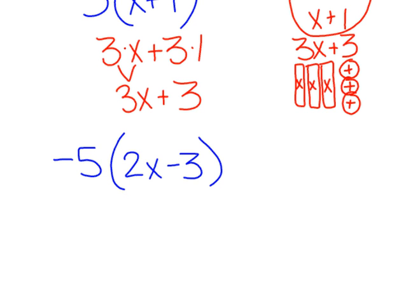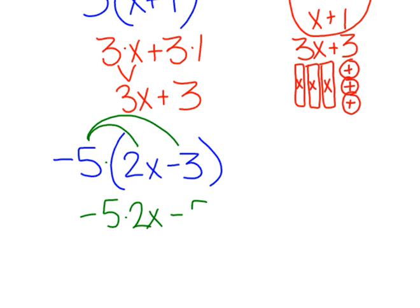Next example: negative 5 times the quantity of 2x minus 3. We can still distribute — you're only doing this because there's multiplying there. So we have negative 5 times 2x, and then negative 5 times negative 3. Negative 5 times 2x is negative 10x, and negative 5 times negative 3 is positive 15. So that expression simplifies to negative 10x plus 15.